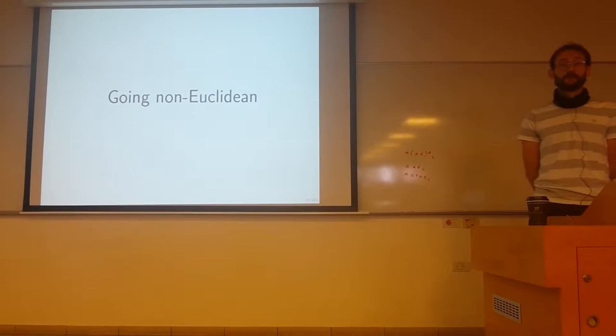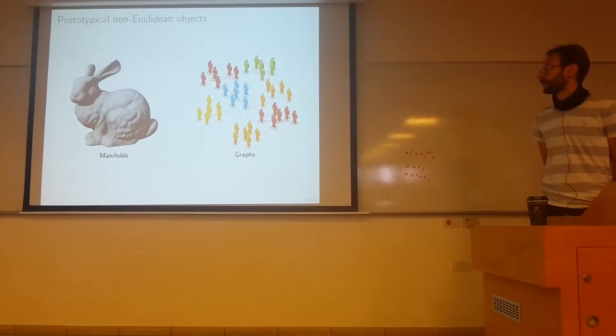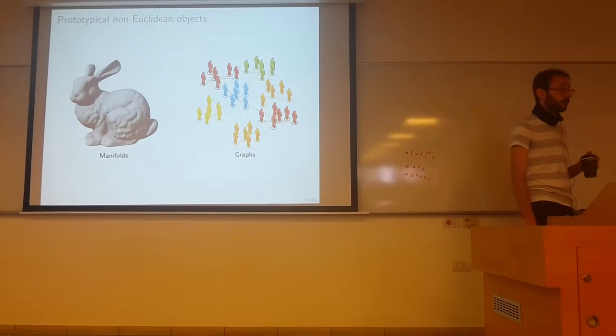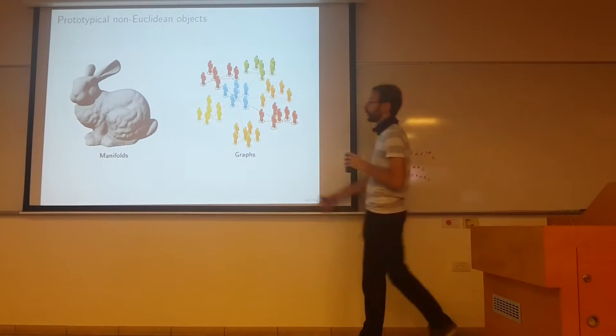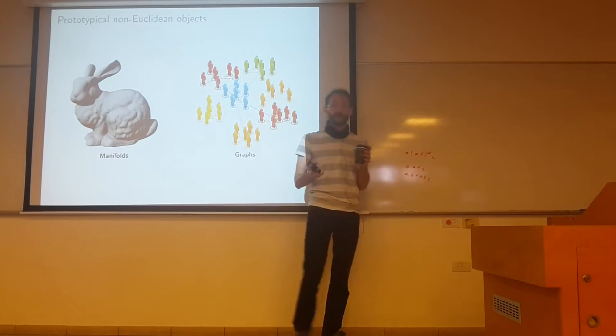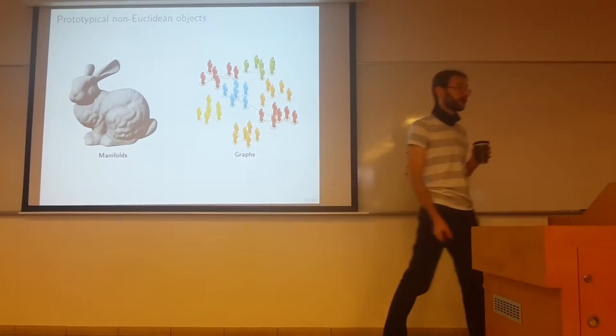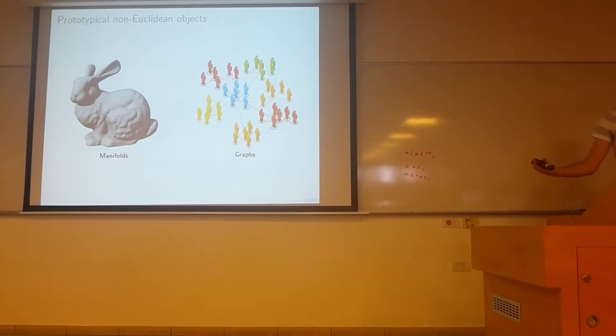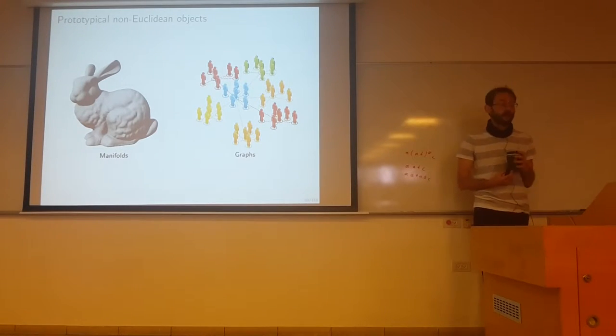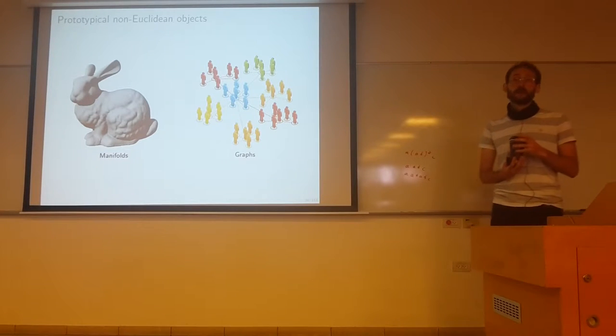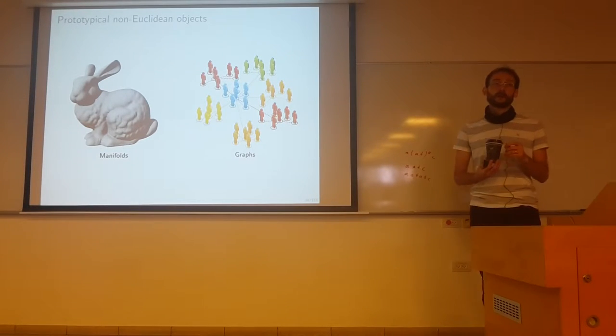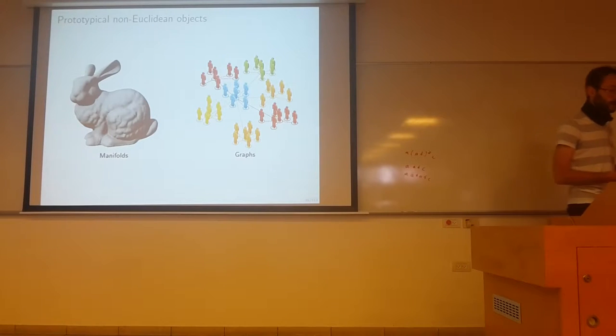We want to go to non-Euclidean structure today. So the two prototype objects that I would like to deal with are the manifolds and graphs. So manifolds are a good model for 3D shapes. They represent boundary surfaces of three-dimensional volumes. And graphs basically, you know that graphs can measure any kind of interaction between abstract objects. Social relations, connections, and so on. Basically even high-dimensional data can be modeled as a kind of graph that represents some local, lower-dimensional structure.